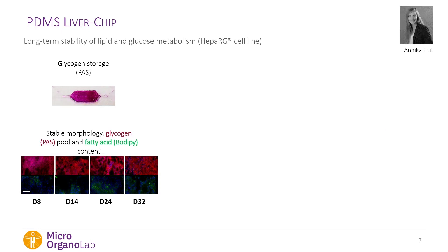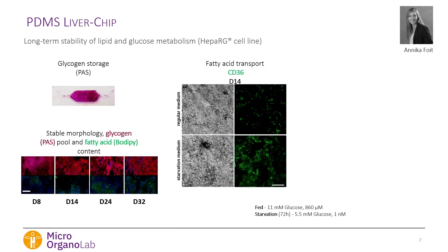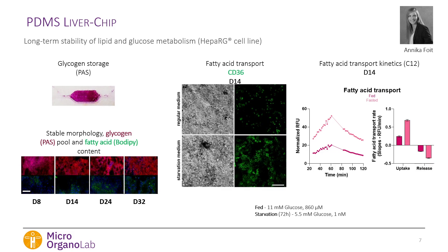Moving to the liver, we wanted to know how long it remains stable in terms of lipid and glucose metabolism. We adapted the chip design from Professor Alexander Mosik into our PDMS platform and observed up to one month of stable glycogen content, fatty acid content, and hepatocyte morphology using the HepaRG cell line. At day 14, starvation — reducing glucose and insulin — led to overexpression of CD36, a facilitator of fatty acid uptake, with fasted cells showing much higher fatty acid uptake and release rates.